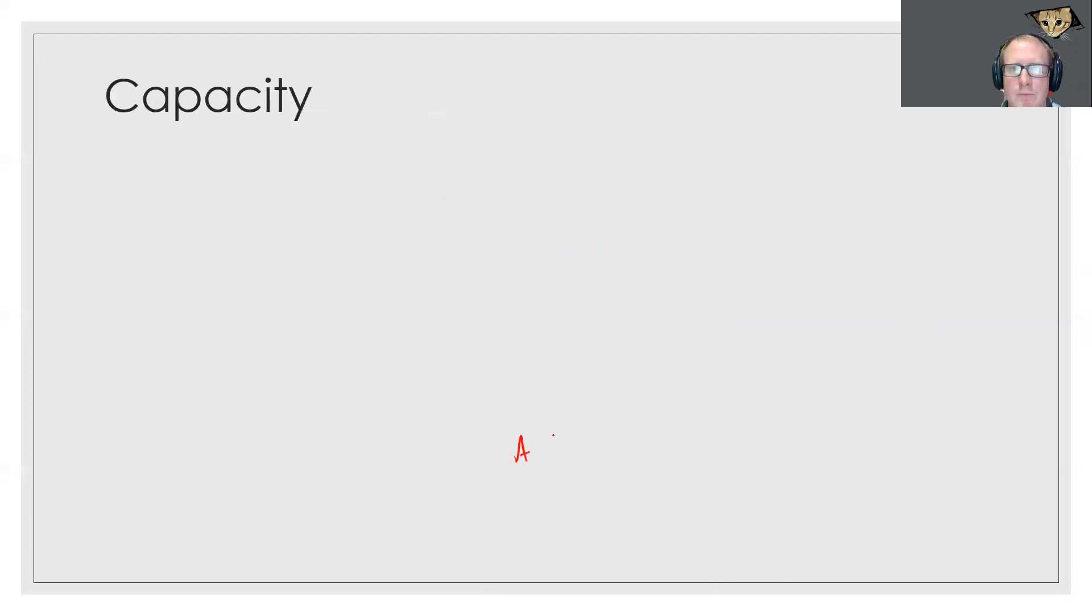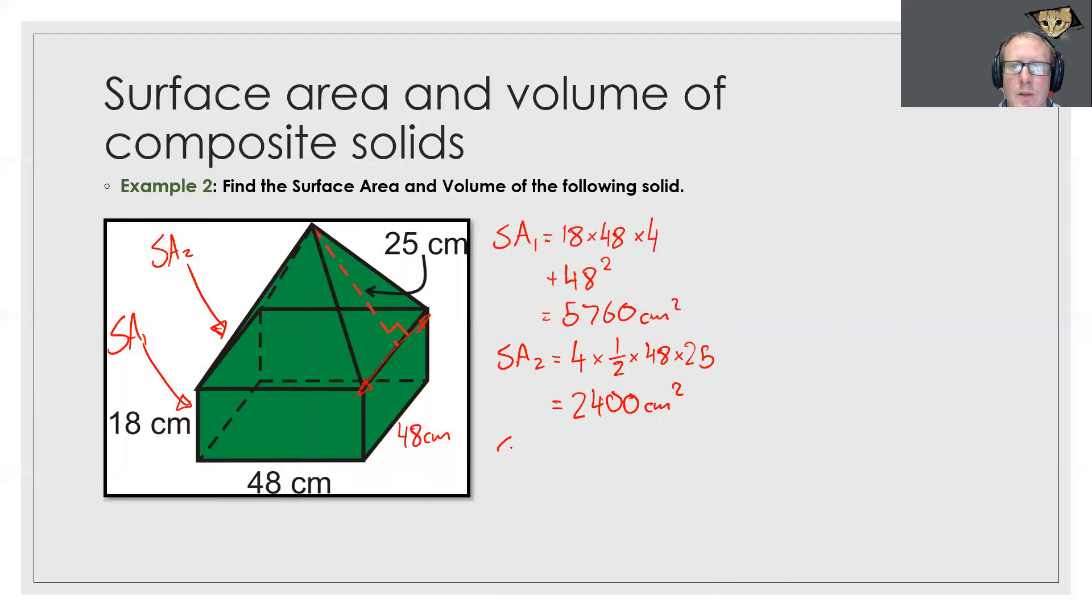We can just put that in our calculator and I get 2400. My total surface area now is just this surface area plus this one which gives me 8,160 centimeters squared.